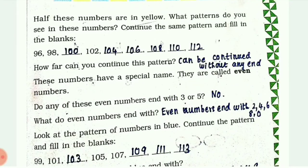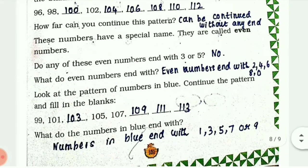Even numbers end with 2, 4, 6, 8, or 0. Look at the pattern of numbers in blue and continue the pattern - fill in the blanks. They have written odd numbers: 99, 101, 103. In this way you can continue the pattern. What do the numbers in blue end with? They end with 1, 3, 5, 7, or 9.